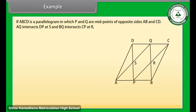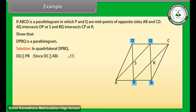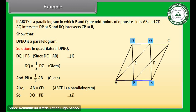Example. If ABCD is a parallelogram in which P and Q are midpoints of opposite sides AB and CD, AQ intersects DP at S and BQ intersects CP at R, show that DPBQ is a parallelogram. Solution: In quadrilateral DPBQ, DQ is parallel to PB since DC is parallel to AB — mark it as (1). DQ is equal to one half DC and PB is equal to one half AB — given. Also AB is equal to CD because ABCD is a parallelogram. So DQ is equal to PB — mark it as (2). Therefore from (1) and (2), DPBQ is a parallelogram.